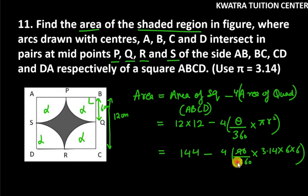Now 90 over 360 can be cancelled as 1 over 4. Now 4 and 4 can be cancelled. So we are left with 144 minus 3.14 into 6 into 6. 6 into 6 is 36, and we multiply 36 with 3.14, so this is 113.04.